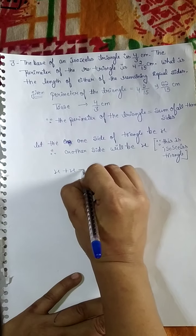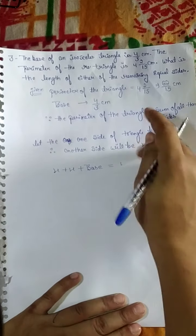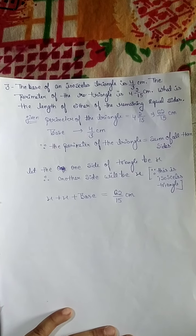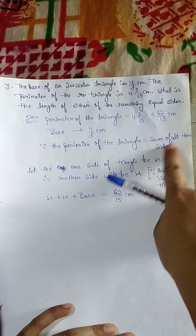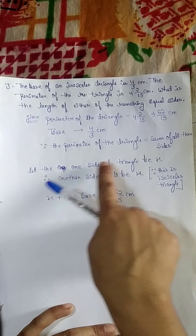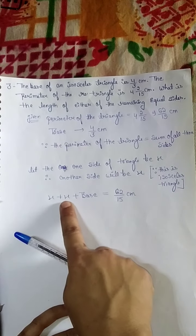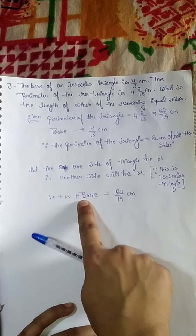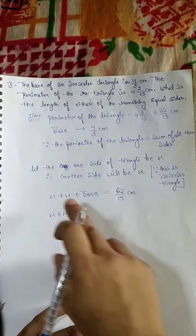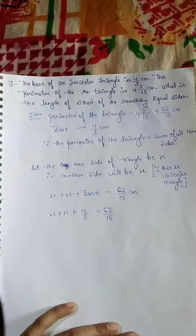So we write: X plus X plus base equals perimeter. The base given is 4 by 3, and the perimeter is 62 upon 15. Therefore: X plus X plus 4/3 equals 62 upon 15. This is because in an isosceles triangle, two sides are equal, so both are X, and the third side is the base.